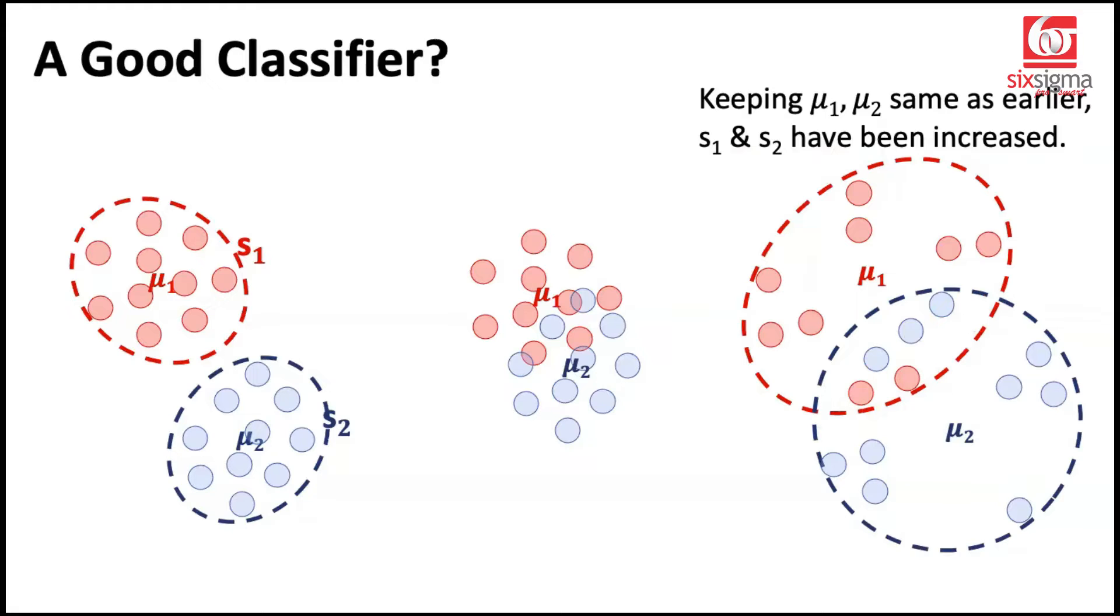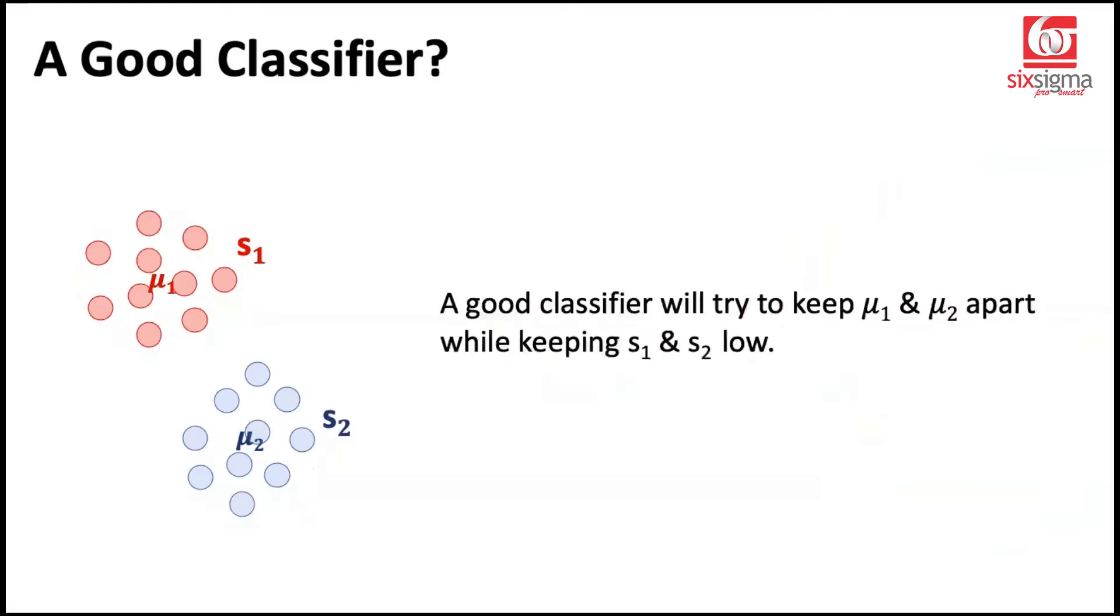So with the help of this, do we understand a general characteristic for a good classifier? Can we say that a good classifier will try to keep mu1 and mu2 apart, which means the classes should have well-separated means and should have controlled standard deviations, which means the points should be pretty range bound and closely bound to the group to which they belong. And then it is always easier for a classifier to draw a line and separate the two classes or perform a classification task. So if you've understood this, you've understood an important portion related to linear discriminant analysis. We'll come back to the same point in some time.